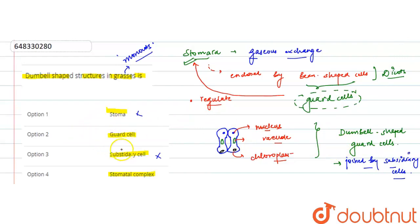So the correct option for this question would be the guard cells, because dumbbell shaped guard cells are present in the monocots. And monocots example, the grasses. So option 2 would be the correct answer for this particular question.